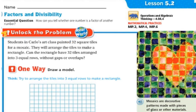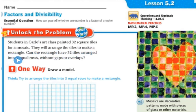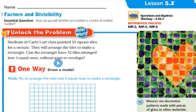Let's unlock the problem. Students in Carlos' art class painted 32 square tiles for a mosaic. They will arrange the tiles to make a rectangle. Can the rectangle have 32 tiles arranged into three equal groups without gaps or overlaps?